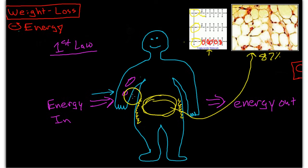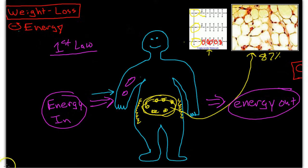When we have excess energy in, if energy in is greater than energy out, then we end up storing it. Our body stores it in adipose tissue by making extra triglycerides and we get fat.